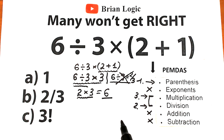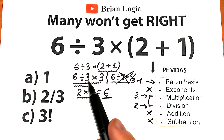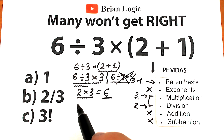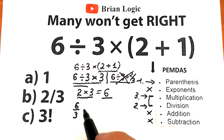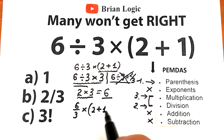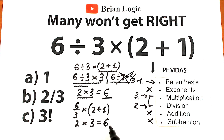The correct answer is 6. For those who don't trust this, you can write 6 over 3 as a fraction. So we have 6 over 3 as a fraction, times (2 plus 1). Since 6 divided by 3 equals 2, we have 2 times 3, which equals 6. Same answer.